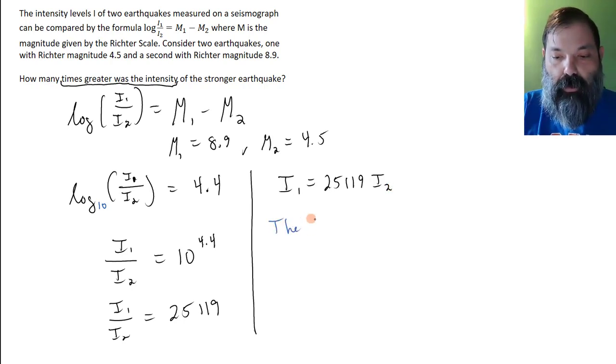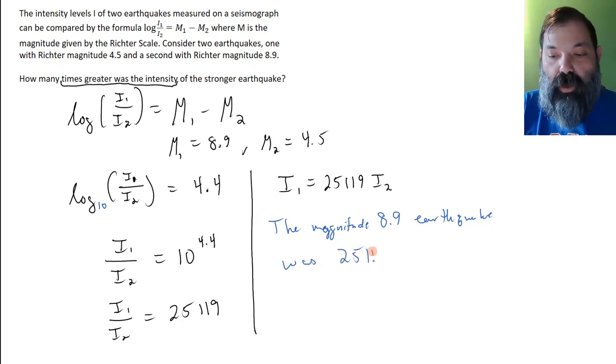So this is telling us that the 8.9 magnitude earthquake, the magnitude 8.9 earthquake, was 25,119 times greater in intensity.